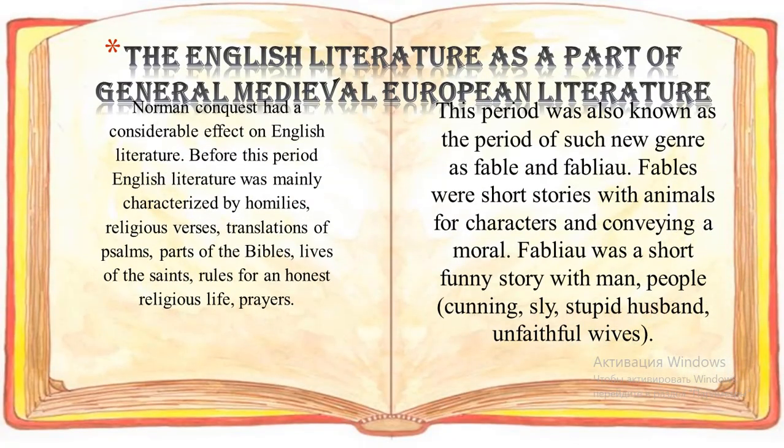The Norman Conquest had a considerable effect on English literature. Before this period, English literature was mainly characterized by homilies, religious verses, translations of Psalms, parts of the Bible, lives of the saints, rules for religious life, and prayers. This period also saw new genres such as the fable and the fablio. Fables were short stories with animal characters conveying a moral. The fablio was a short funny story featuring cunning, sly, or stupid husbands and unfaithful wives.